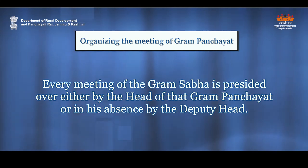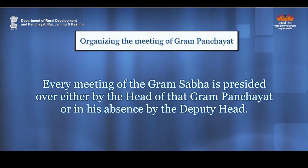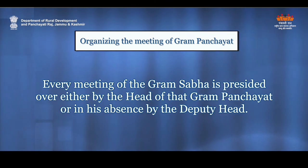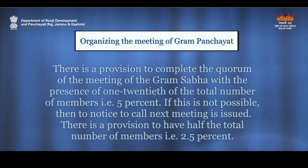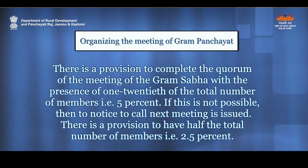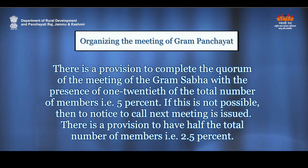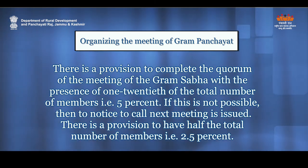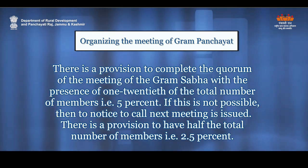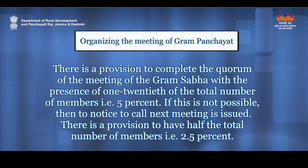Every meeting of the Gram Panchayat is presided over by the head, or in his absence by the deputy head. There is a provision to complete the quorum with the presence of 1/20th of the total number of members, i.e., 5%. If this is not possible, a notice to call the next meeting is issued. There is also a provision to have half the total number of members, i.e., 2.5%.